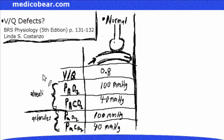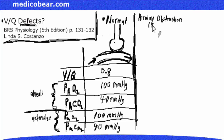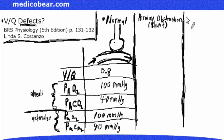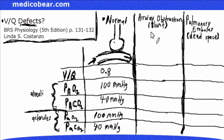Now we're going to look at some abnormals — some defects. The two things we'll examine are airway obstruction, also known as a shunt, and pulmonary embolus, where we'll see dead space.